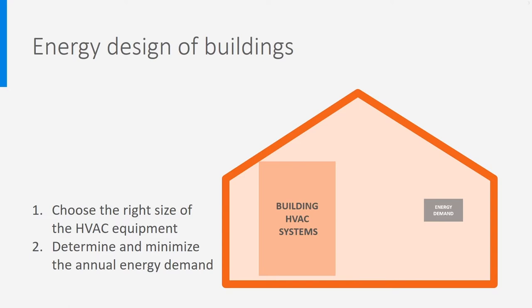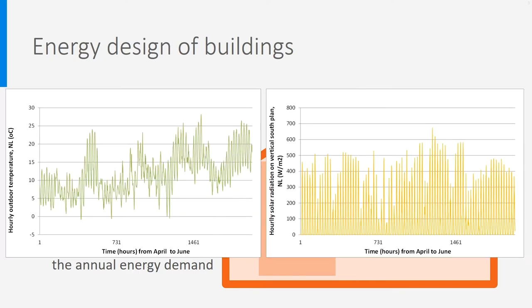Do you remember that we calculated very easily the energy used by a television by multiplying the power by the number of hours of use? That is easy because the power of a television is constant. But the power for the space heating and cooling demand depends on outdoor temperature and solar radiation and is changing all the time, at least in many climates. See here the hourly temperature curve between the beginning of the Dutch spring and the summer, and the changes in solar radiation on the right in the same period.